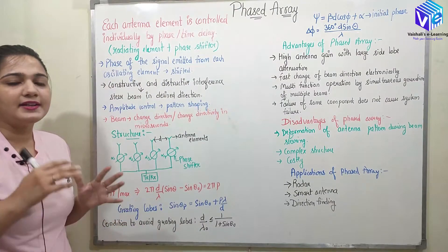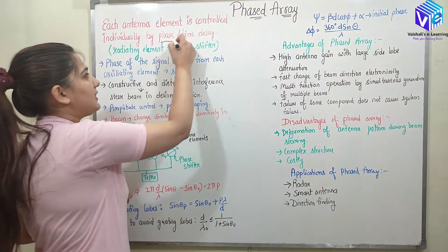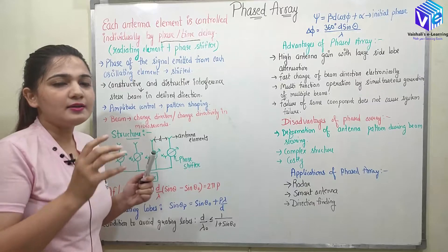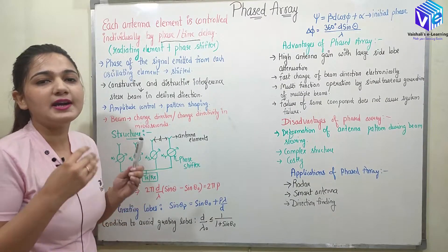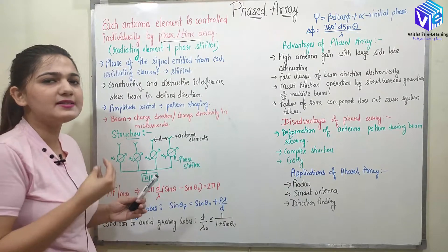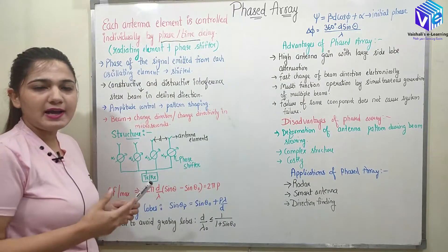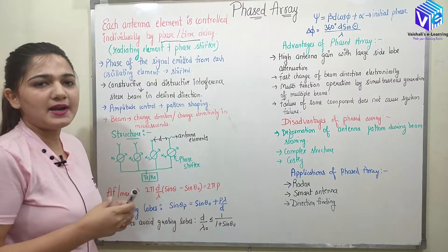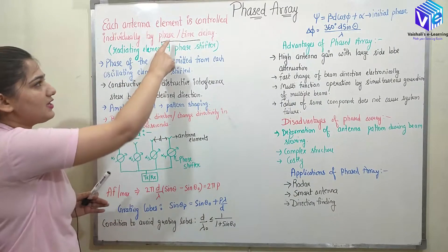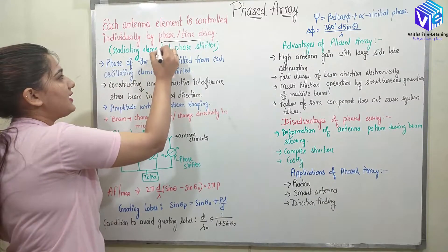So phased array — the direction of the output is controlled by the phase or time delay elements. These are called phase delay elements or time delay elements which are there with each and every radiating element inside the linear array. Each antenna element — the radiating elements are the antennas — has one phase or time delay device which is going to control the phase of the antenna. We know if I change the phase of the antenna, the output radiation is going to change.